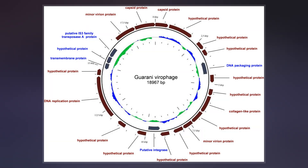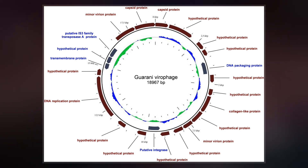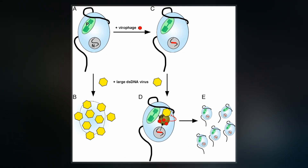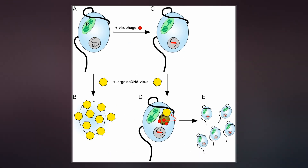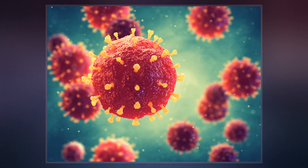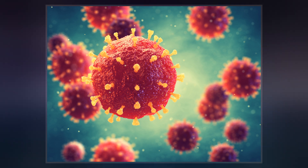One of the characteristics of viraphages is that they have a parasitic relationship with the co-infecting virus. Their dependence upon the giant virus for replication often results in the deactivation of the giant virus. The viraphage may improve the recovery and survival of the host organism.